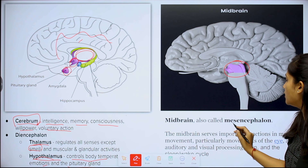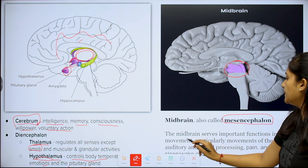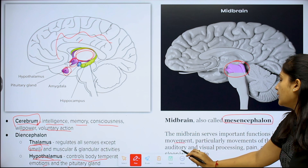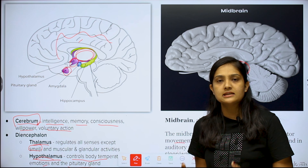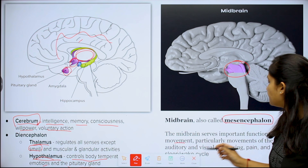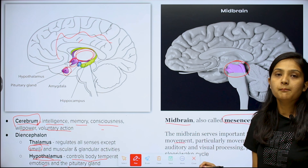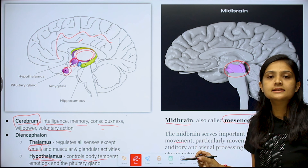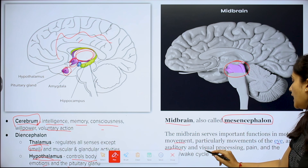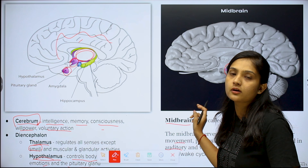The midbrain, also called the mesencephalon, plays an important role in motor movement — particularly the movement of the eye and auditory processing. The midbrain controls visual processing, eye movement, auditory (sound) response, pain sensation, and the wake-sleep cycle.